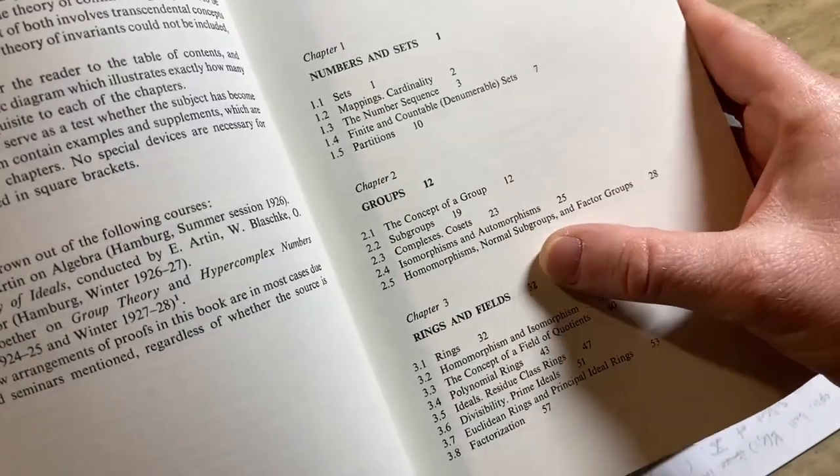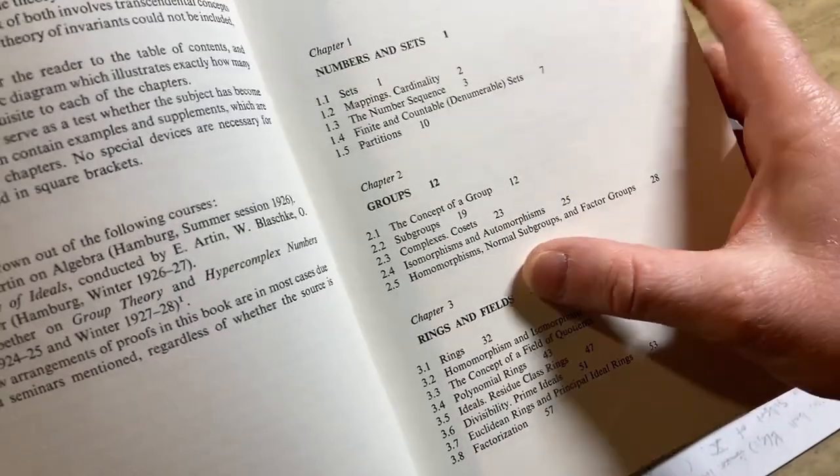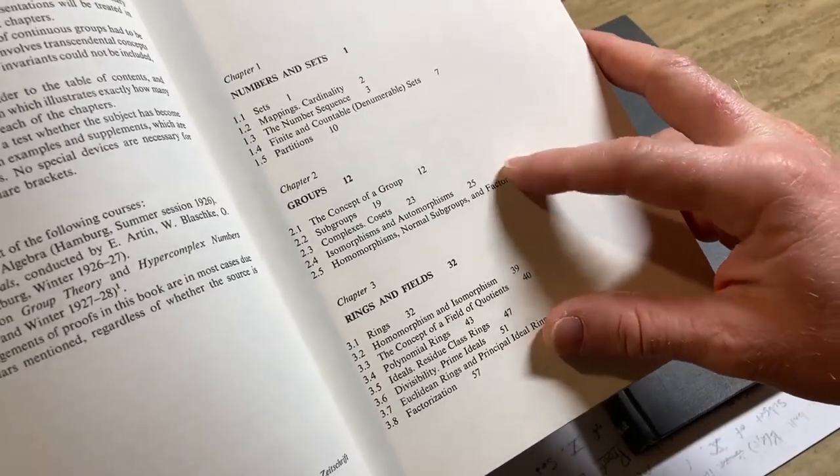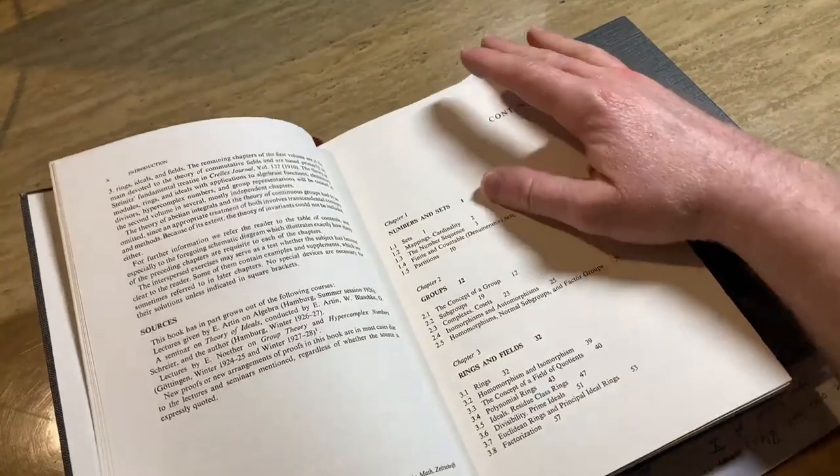And look, it talks about subgroups, complexes, cosets, isomorphisms and automorphisms, homomorphisms, normal subgroups and quotient groups. So it's got to be really really terse. We should take a look at this just to see how terse it is. We'll look at it in a minute.